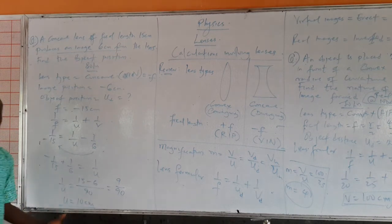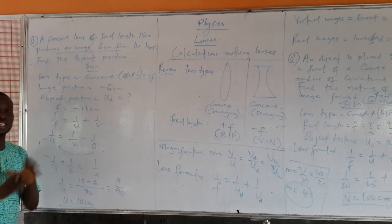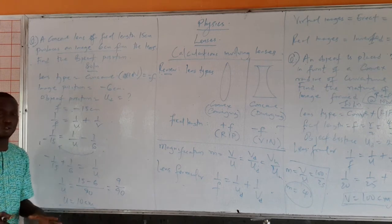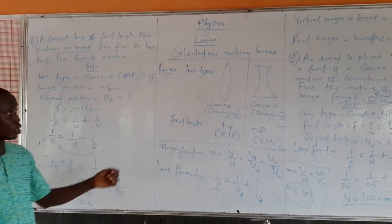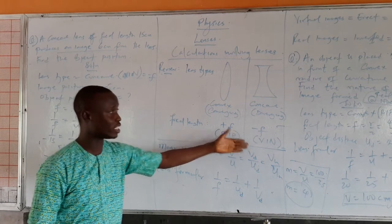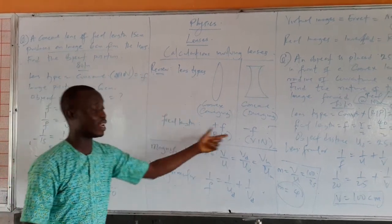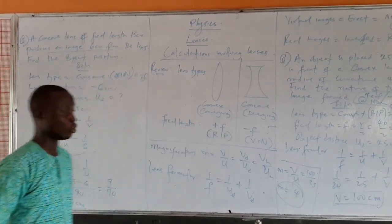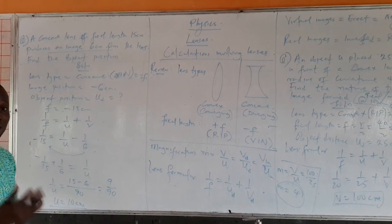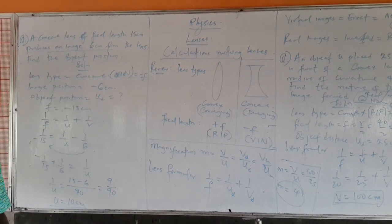So at the end of the day, the object position is 10 cm — and notice that the object position will never be negative; it is always taken as positive. But the image position can be negative, and the focal length can also be negative depending on the type of lens. If you have any questions on this video, you know how to get back to us. Thank you.